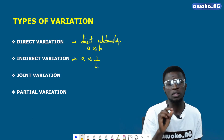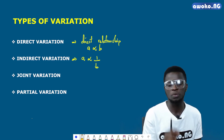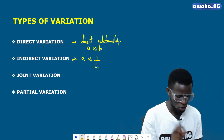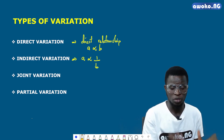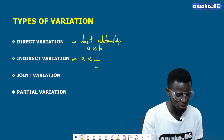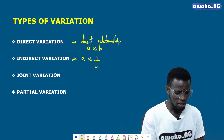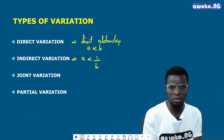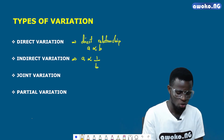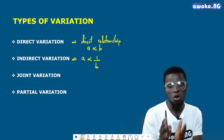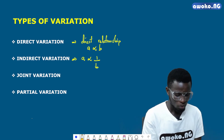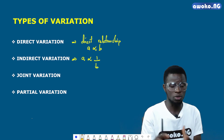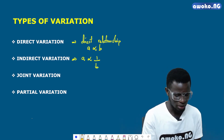The third type is joint variation. Joint variation implies that there is a relationship between two or more quantities — meaning one quantity is related to more than one other quantity. We will cover all these types of variation in detail in subsequent classes, as this is just an introduction.